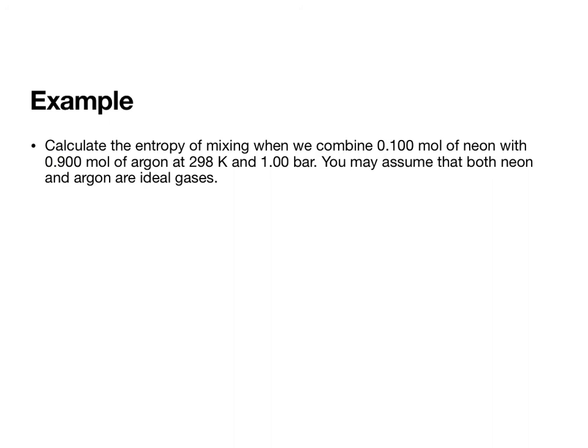Okay, so let's do an example. The example is to calculate the entropy of mixing when we combine 0.1 moles of neon with 0.9 moles of argon at 298 Kelvin and 1 bar. You may assume that both neon and argon are ideal gases. You can also assume that the pressure and the temperature do not change during this process. So what we are going to do is I am going to assume that gas A is neon and gas B is argon.